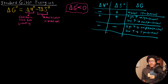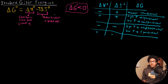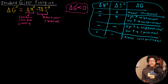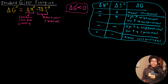The last scenario is if delta H is positive and delta S is negative. Under this scenario, you have an endothermic reaction that has a decrease in entropy. The enthalpy term is positive and the T delta S term also contributes positively, so this is always going to be non-spontaneous. You can look at the signs of delta H and delta S to determine whether your reaction is spontaneous or non-spontaneous by looking at how the interplay between these two affects the sign of delta G.